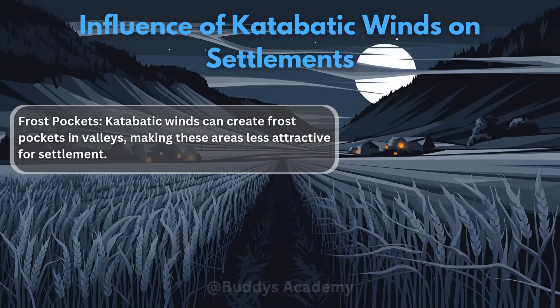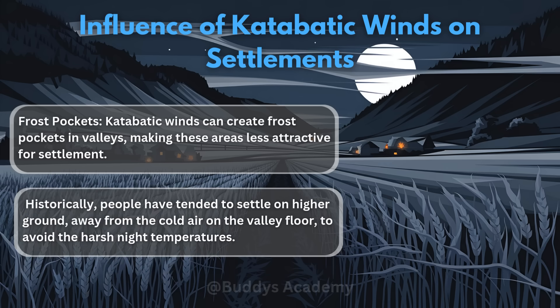Now we are looking at the influence of katabatic winds on settlements. The first influence would be frost pockets. Katabatic winds can create frost pockets in valleys, making these areas less attractive for settlement. Historically, people have tended to settle on higher ground away from the cold air on the valley floor to avoid harsh night temperatures. Humans generally prefer to live in warmer areas, and this will definitely influence where they want to live.